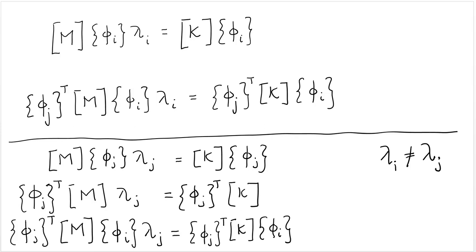The way to prove that is to start here with any particular eigenvalue and eigenvector pair i, let's say. We pre-multiply both sides by the transpose of phi j, which is a different eigenvector corresponding to a different eigenvalue. And we obtain this equation right here.